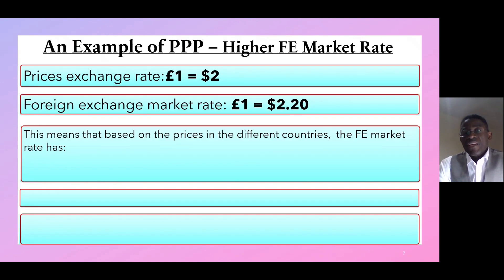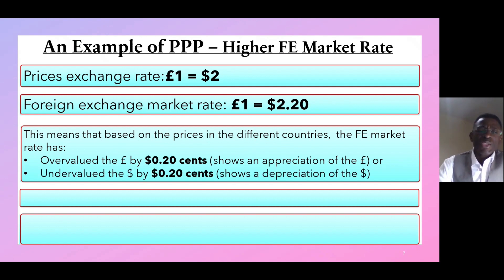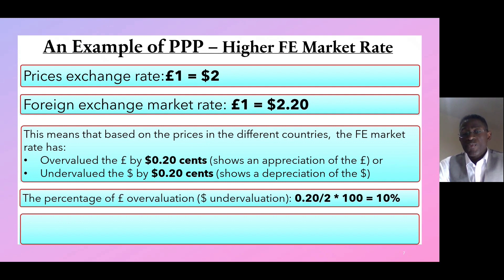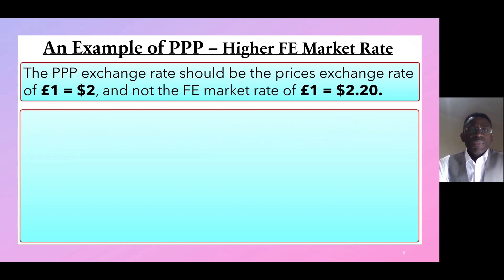Based on the prices in the different countries, the foreign exchange market rate has overvalued the pound by 20 cents, showing an appreciation of the pound, and undervalued the dollar by 20 cents, showing a depreciation of the dollar. The percentage of pound overvaluation or dollar undervaluation is 10 percent. We must adjust the foreign exchange market rate by 10 percent to get the PPP exchange rate. The PPP exchange rate should be one pound equivalent to two dollars, not one pound equal to two dollars and 20 cents.